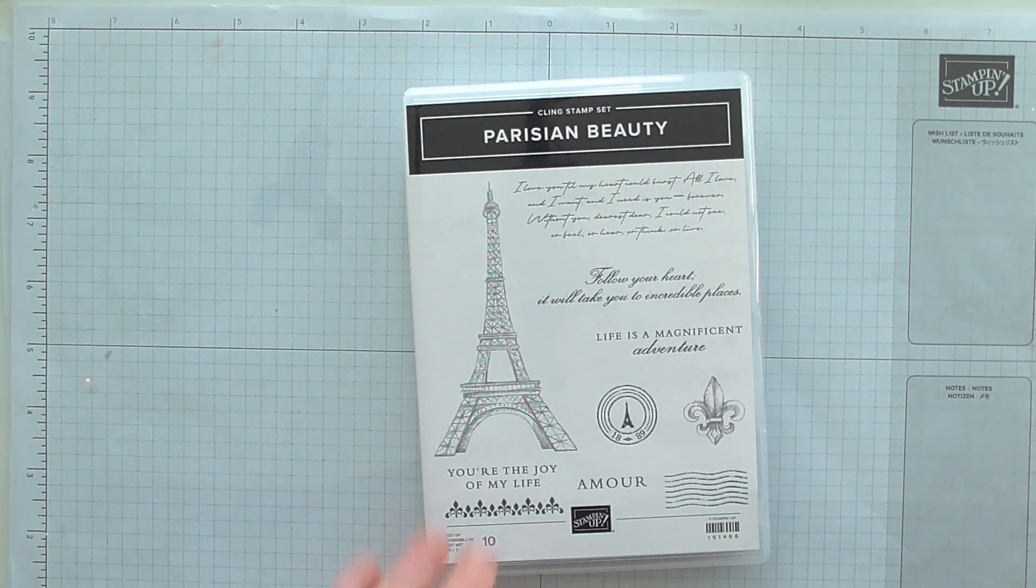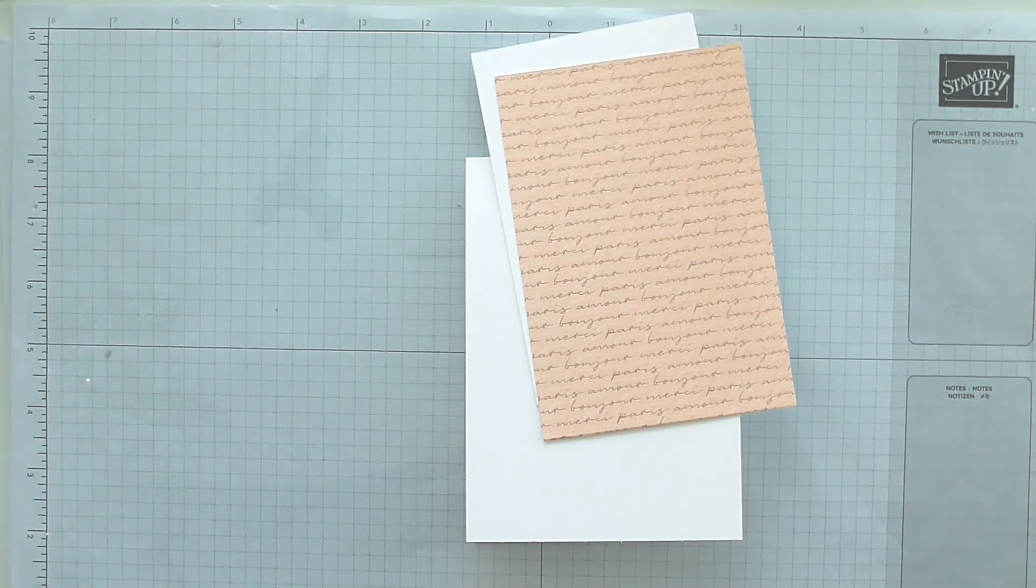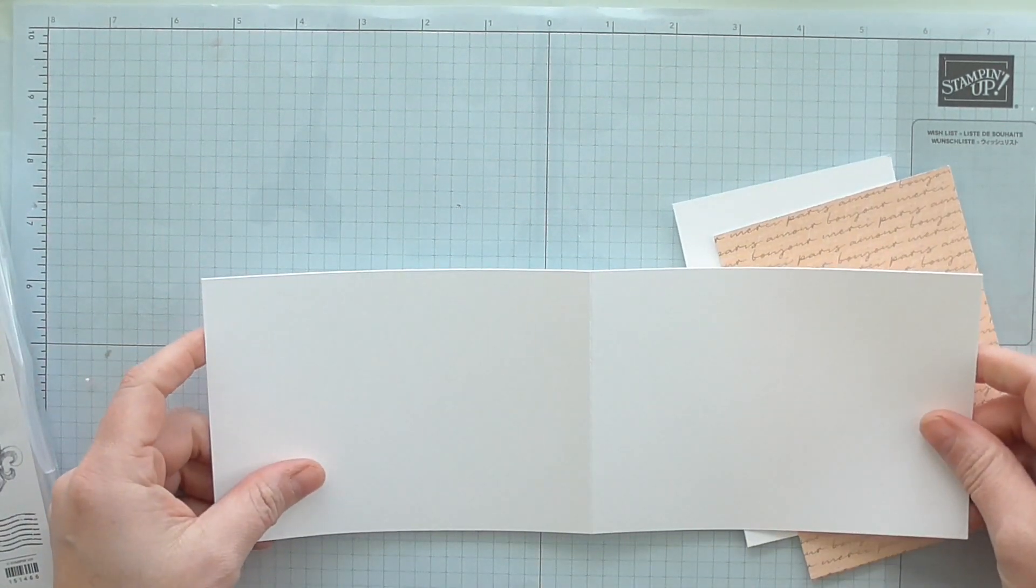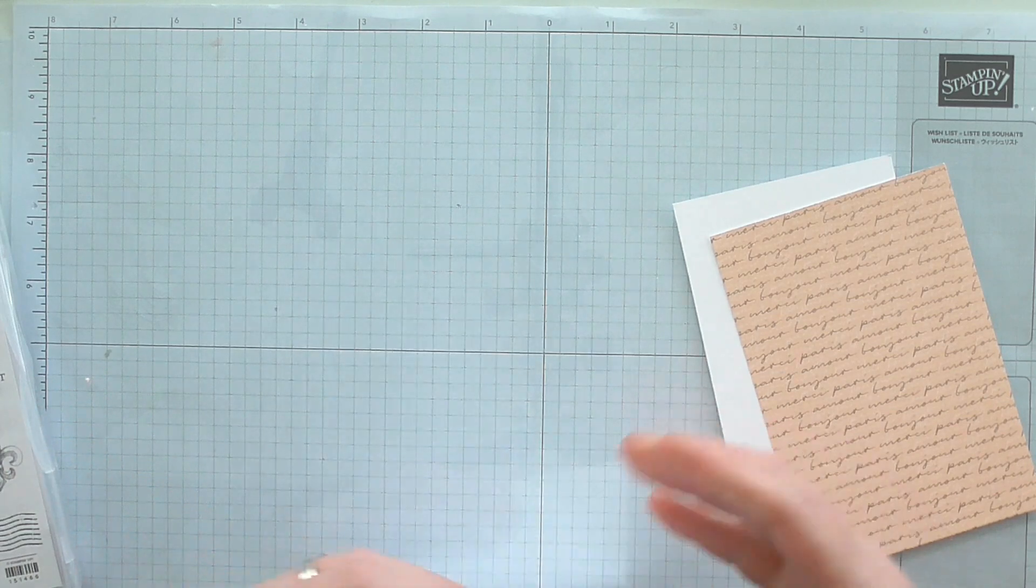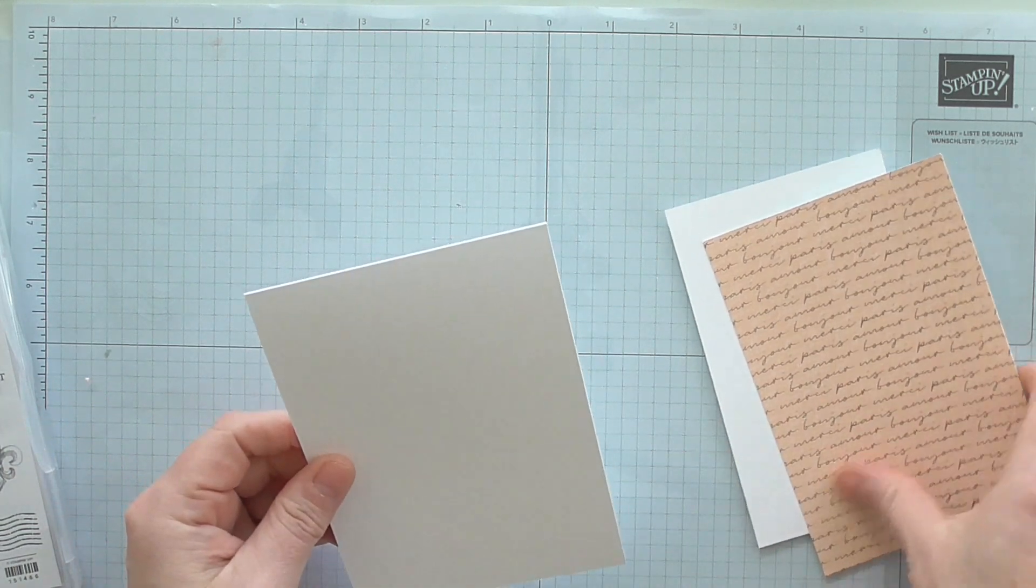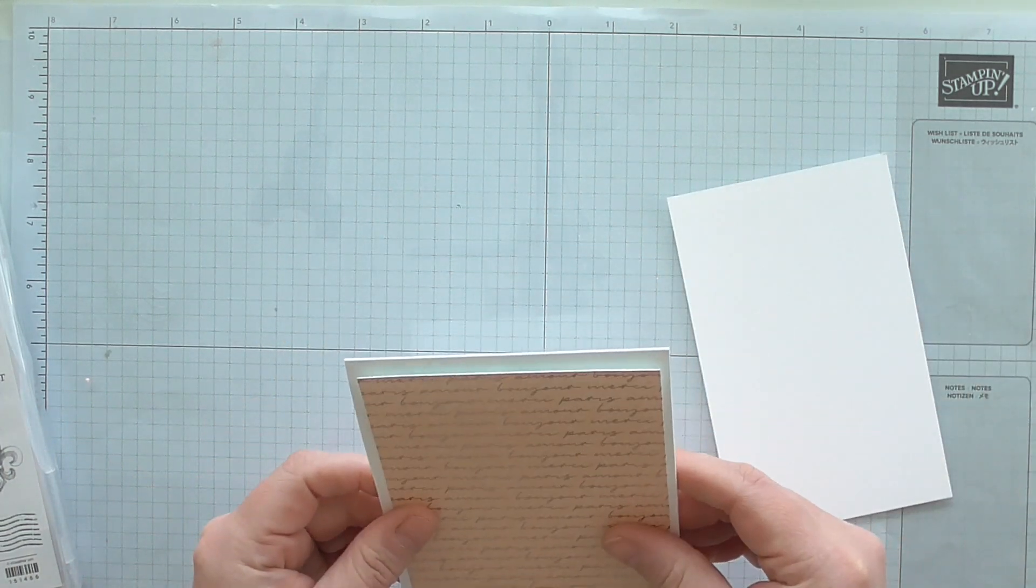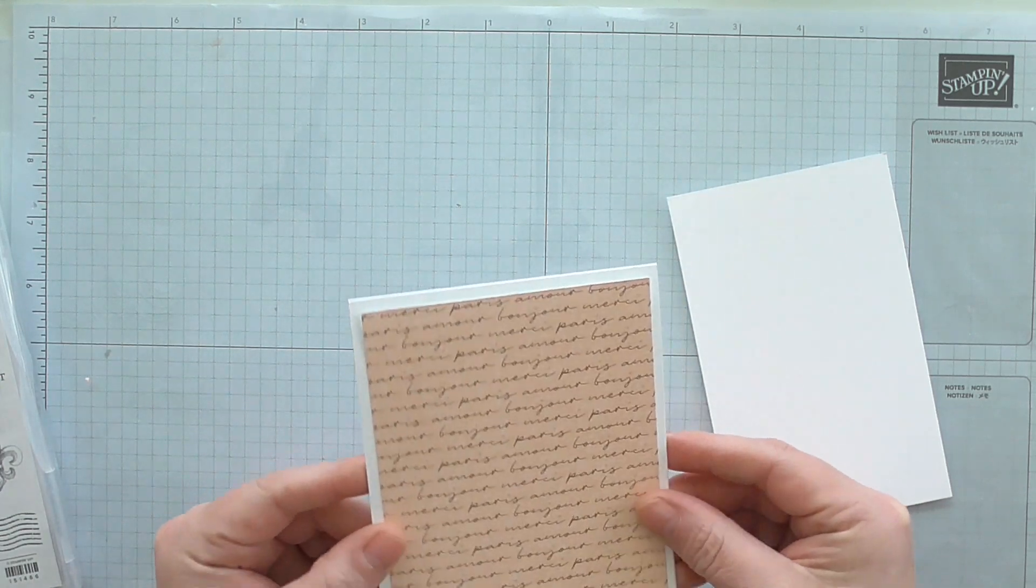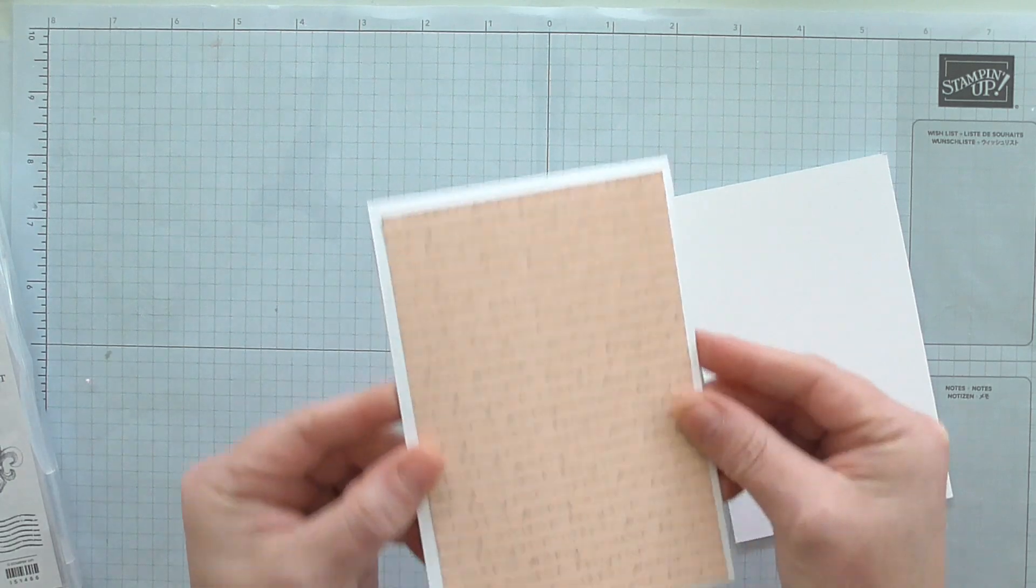I've already cut my card base and this started at 11 3 quarters by 4 and 1 8th, scored it in the middle at 5 and 7 8ths. I've pre-cut some of my paper and this measures 3 and 7 8ths by 5 and 5 8ths, and you can see that beautiful foiled script there.